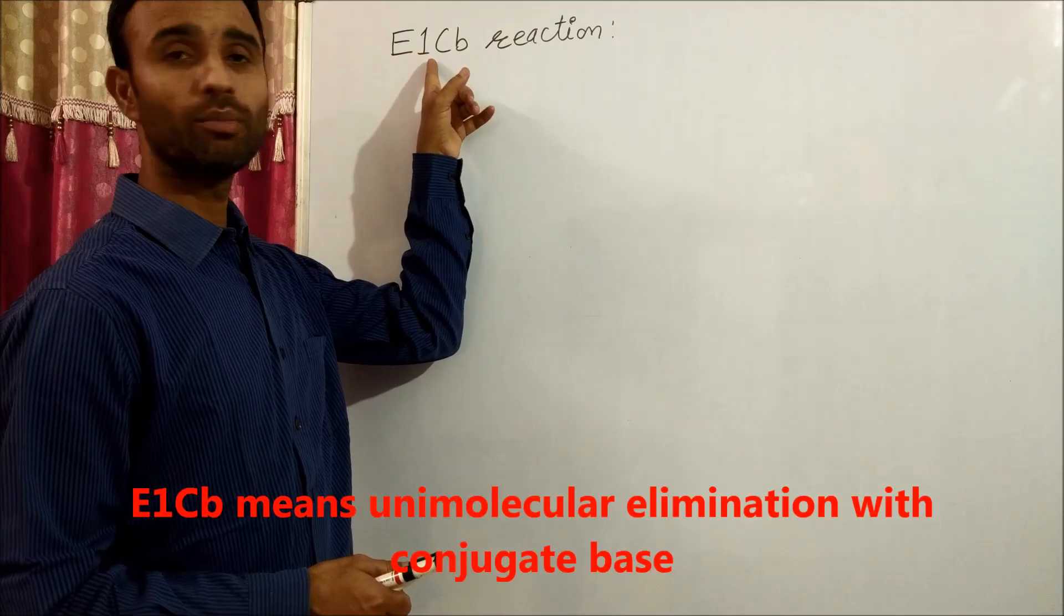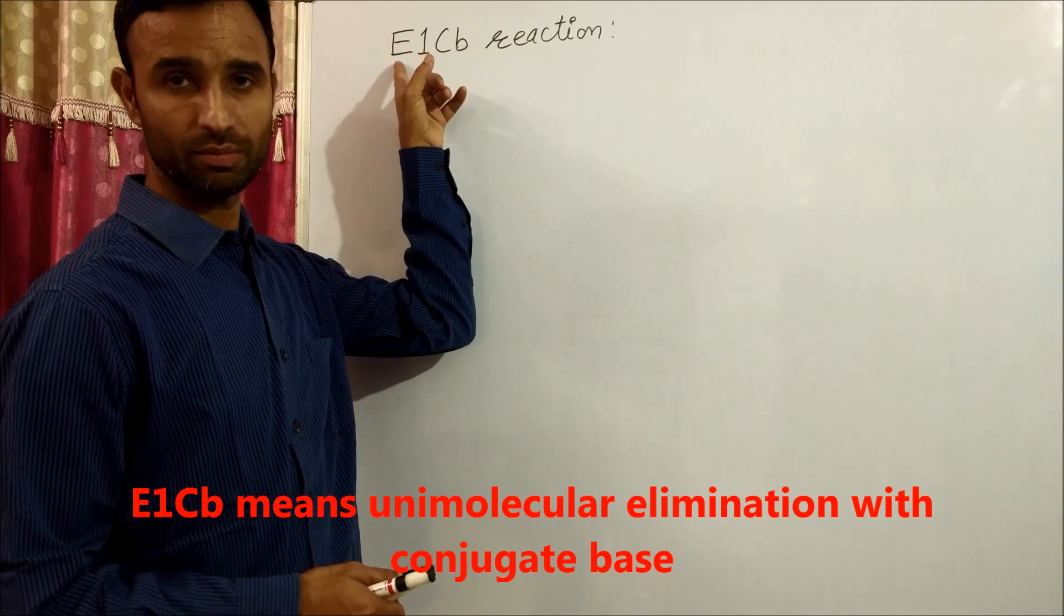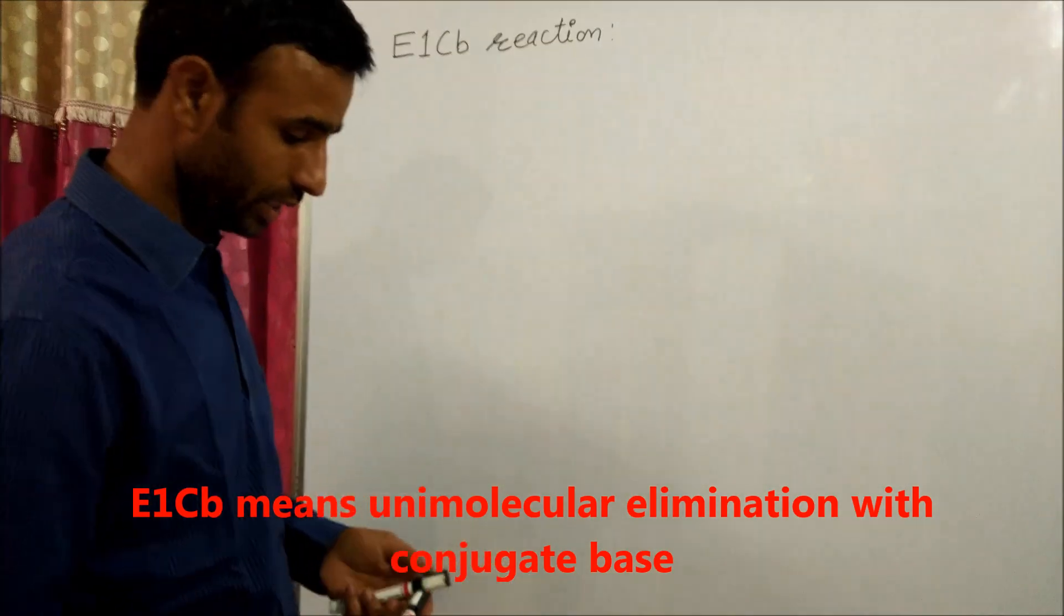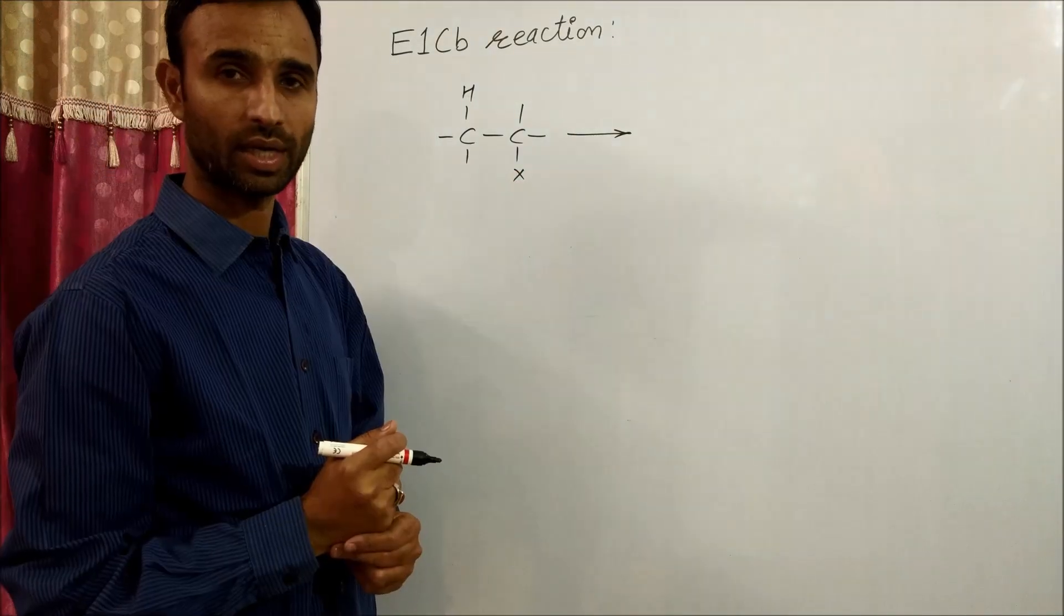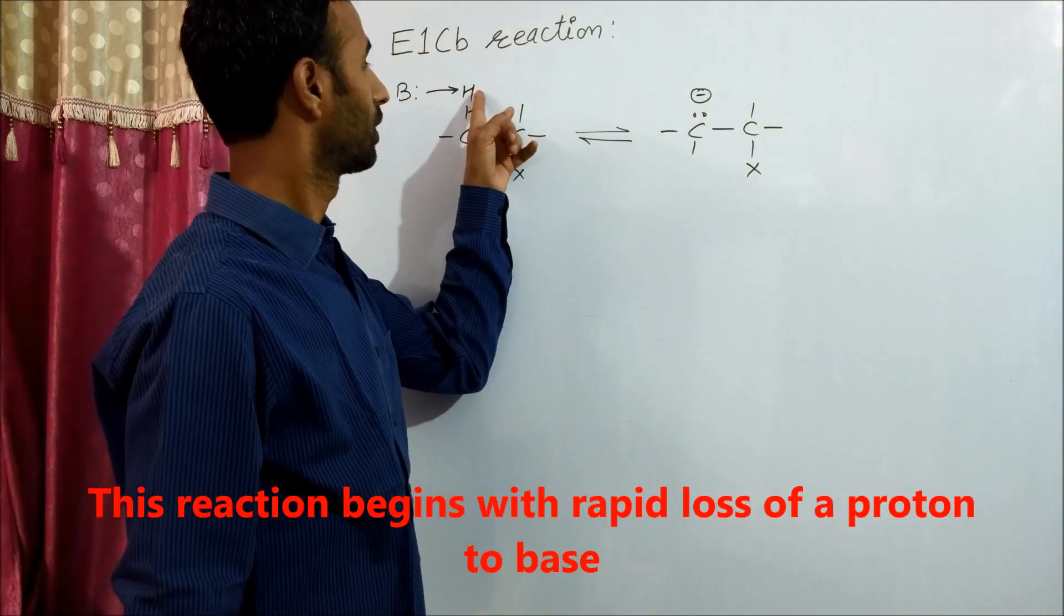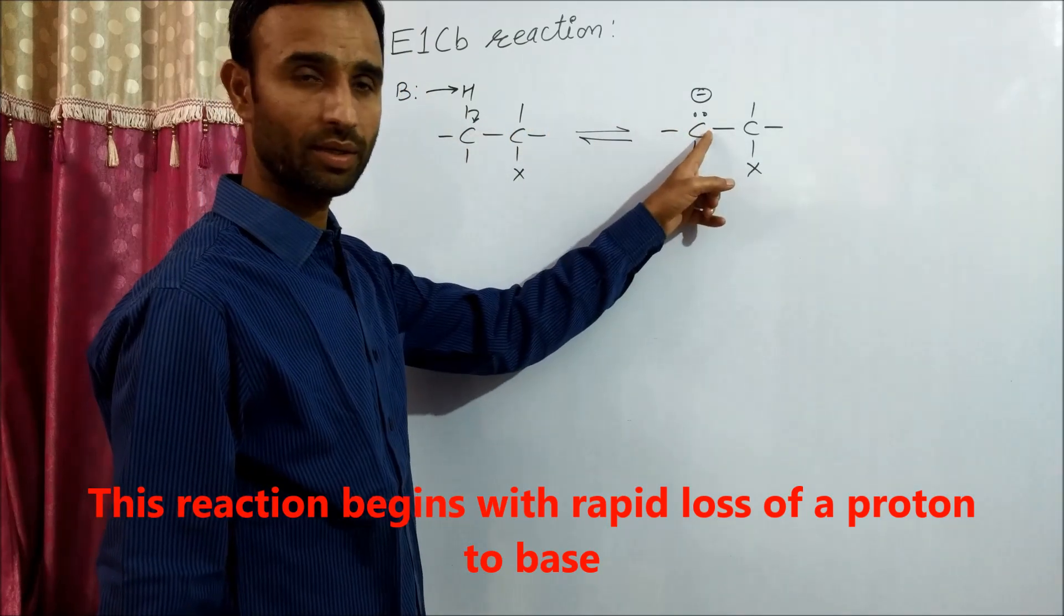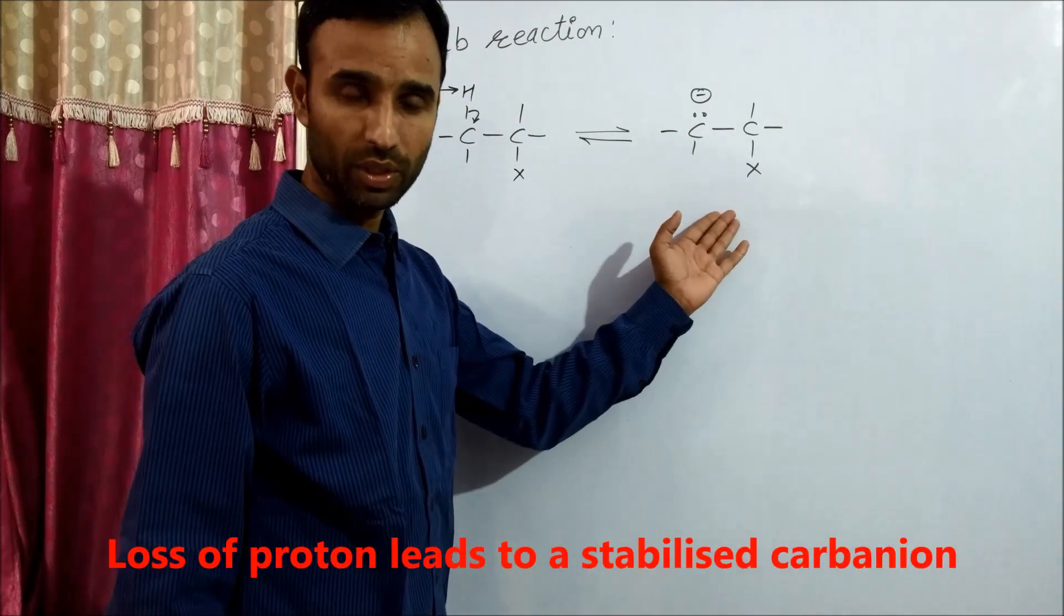E1CB reaction is a unimolecular elimination with conjugate base. In this reaction, an alkyl halide reacts with a base that abstracts the hydrogen, forming a carbanion. This carbanion formation...